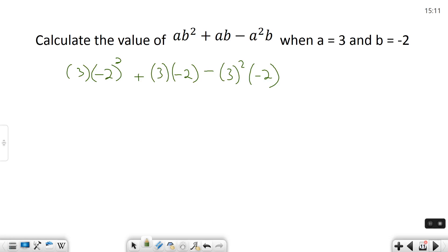Negative 2 squared is positive 4, and 3 times 4 is 12. I'm going to kind of go through a couple steps at a time here. Plus 3 times negative 2 is negative 6. And then minus 3 squared is 9, and 9 times negative 2 is negative 18.